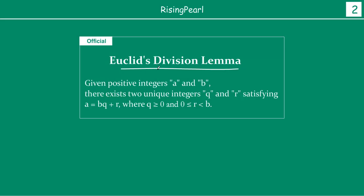Euclid's division lemma or algorithm states that given any two positive integers a and b, there exist two unique integers, namely q and r, such that they satisfy the equation a equals b times q plus r, where q is greater than or equal to zero, and r will be greater than or equal to zero but less than b.